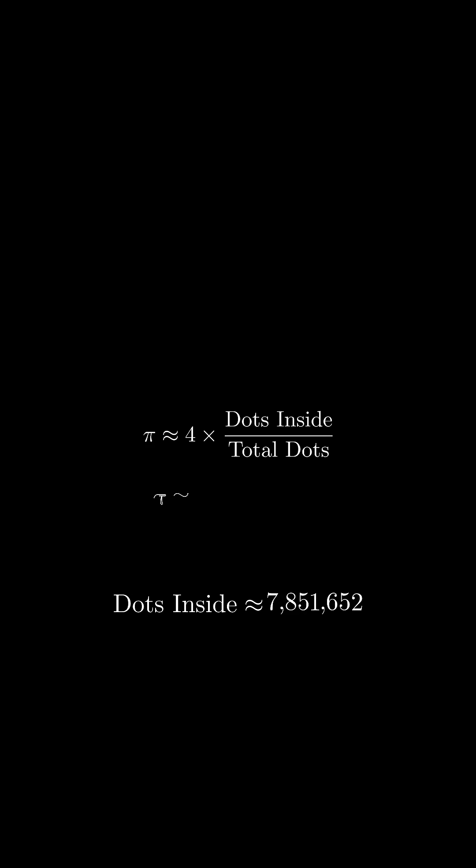So, if we take the number of darts inside, divide by the total, and multiply the whole thing by 4, we get a surprisingly good estimate for pi.